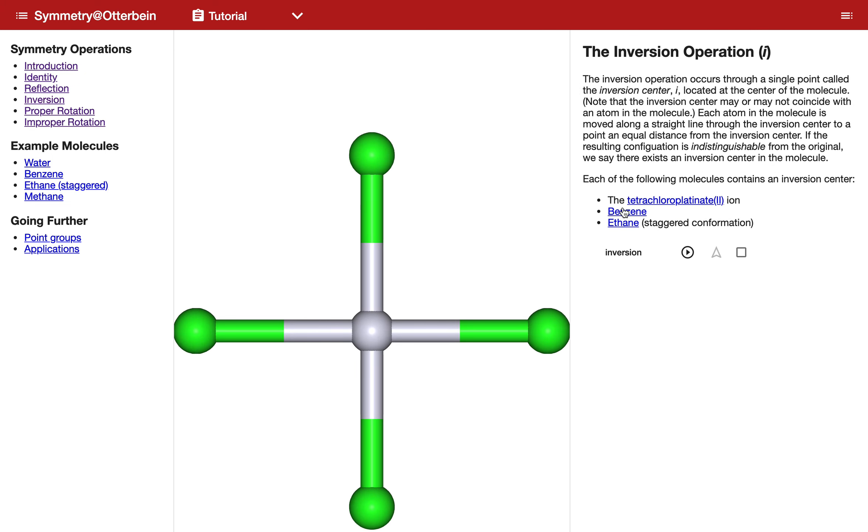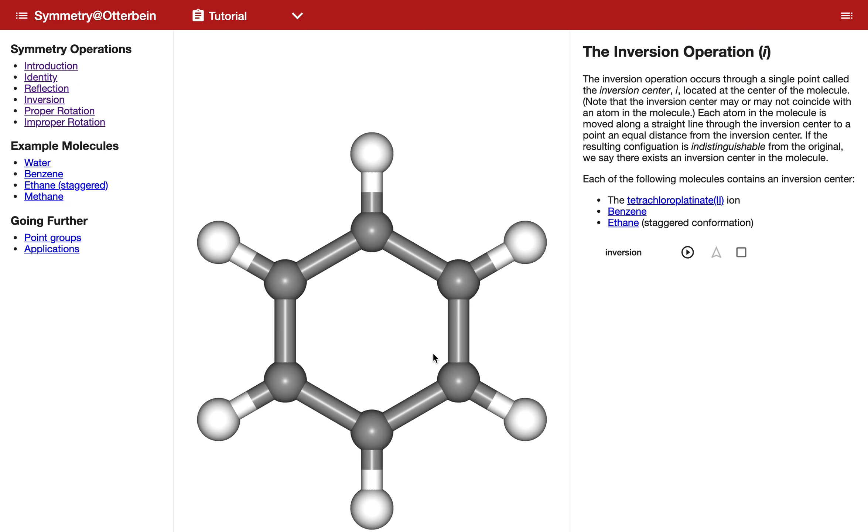If we look at inversion, and in this case I'm going to choose benzene as my example, the inversion center is typically at the center of a molecule, so we'll expect to see it here even though that does not correspond to an atom of the molecule.